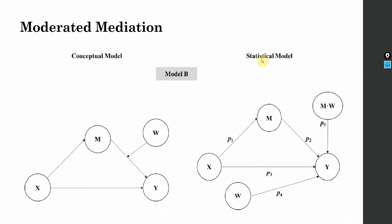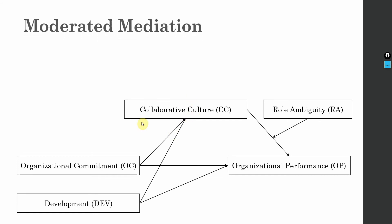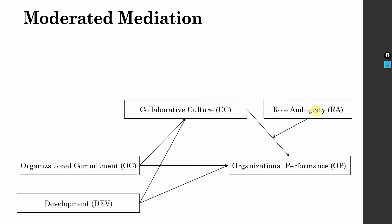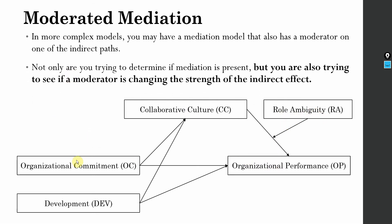This is the general conceptual and statistical model we are going to use. In our example, we've got two independent variables, with one mediator, one moderator, and one dependent variable. We are going to assess whether the indirect effect from organizational commitment to organizational performance through collaborative culture is moderated by role ambiguity. Similarly, we are going to assess whether the indirect effect from development to organizational performance through collaborative culture is moderated by role ambiguity. So two indirect effects will be assessed, and we are trying to see if role ambiguity changes the strength of the indirect effect.